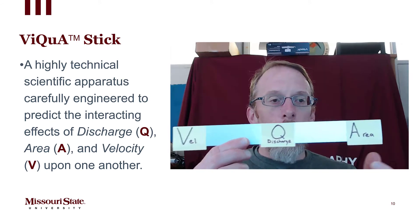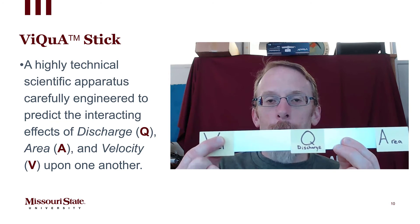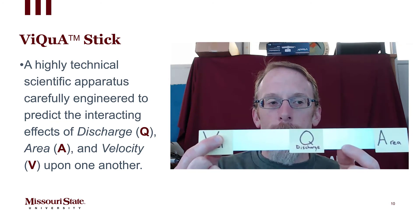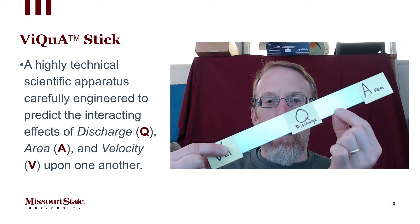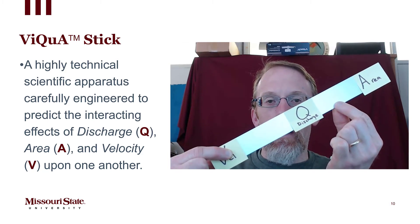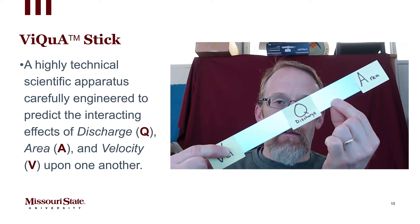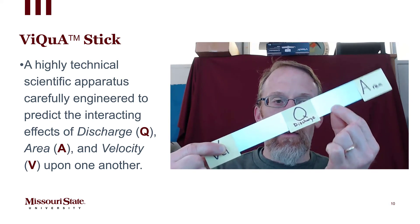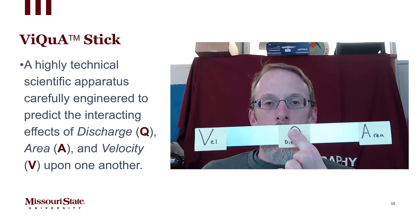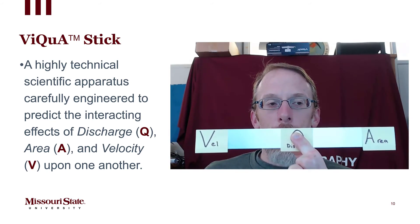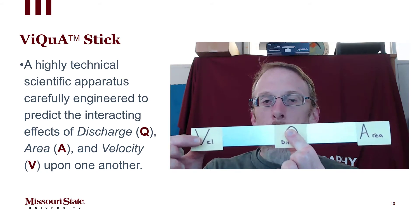But it shows the relationship. Here I'm going to put my finger and hold velocity constant. If velocity is constant and I increase area, so if I make the cross-section of the area of the channel greater, discharge has to increase based on the mathematical relationship. Now if I hold discharge constant, so discharge does not change in the downstream direction but area increases...